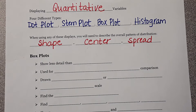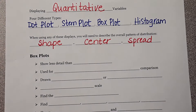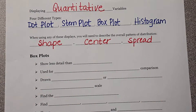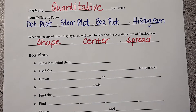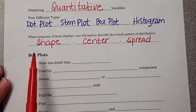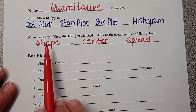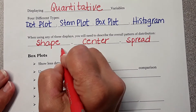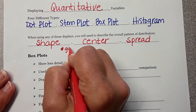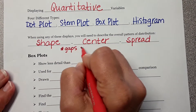Are there gaps? In a histogram you're going to see gaps, but in a box plot you're not going to see those gaps as much. Now we're going to talk about the difference between a box plot and a histogram. Again, when you're analyzing a display, we're going to talk about shape, center, spread, and you might want to add gaps and clusters.